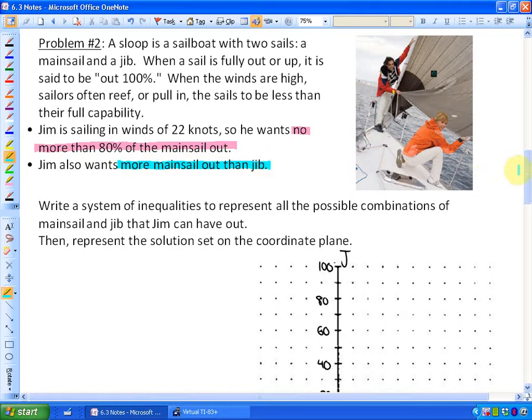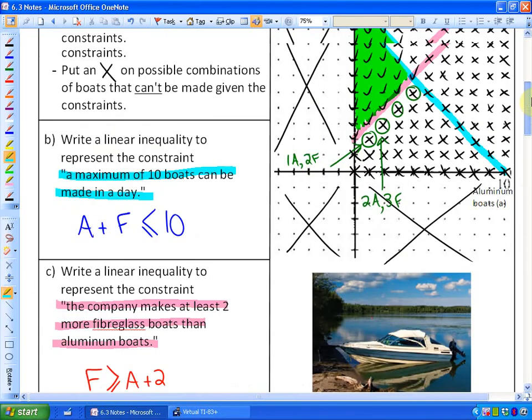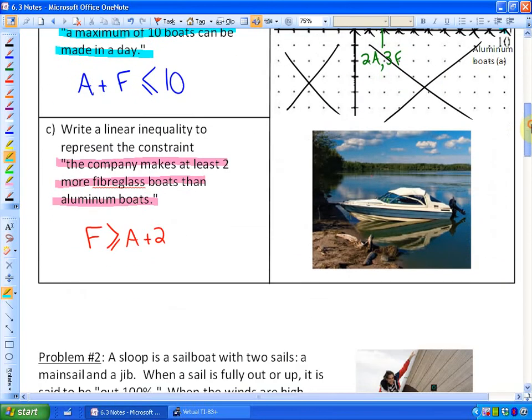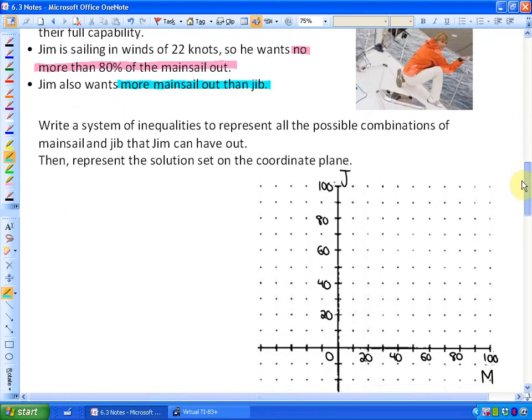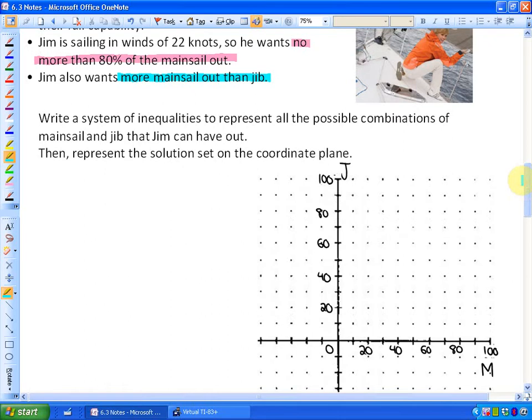The question says: write a system of inequalities to represent all the possible combinations of mainsail and jib that Jim can have out. Then represent the solution set on a coordinate plane. In other words, we would like to represent on this graph all of the possible combinations of mainsail and jib that Jim can have out, given his constraints. So the first thing I am going to do is represent the variables.